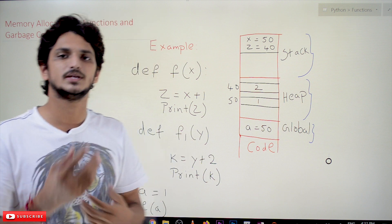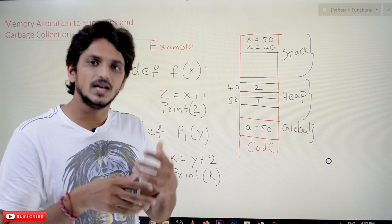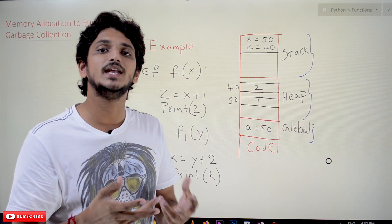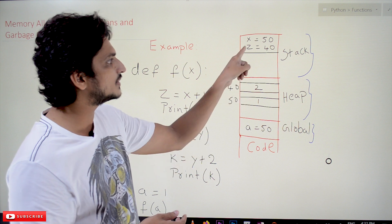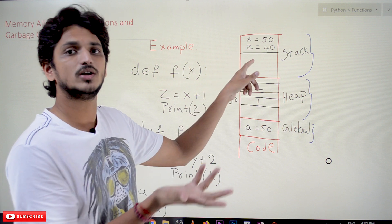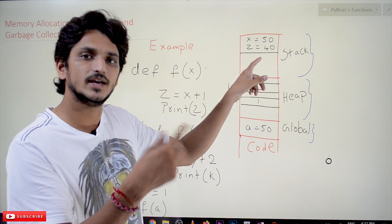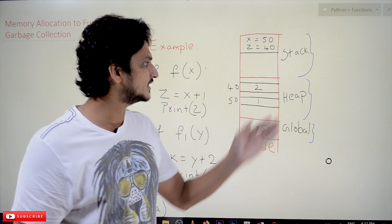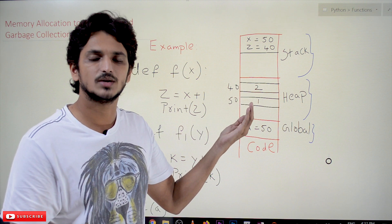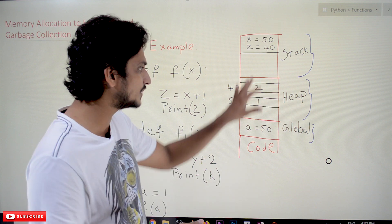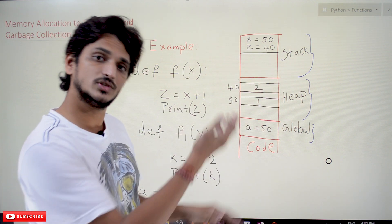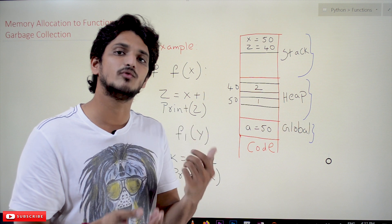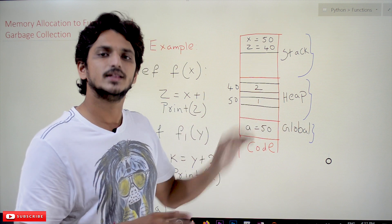This brings us to garbage collection. Garbage collection means it will delete space that is no longer needed. The object 2 is not referenced by any variable — previously it was referenced by z, but after completion of the function, z is gone. So the garbage collection program executes and removes this space. If an object is not referenced by any variable, the space is removed automatically. This saves heap space so it can be reused for other variables.